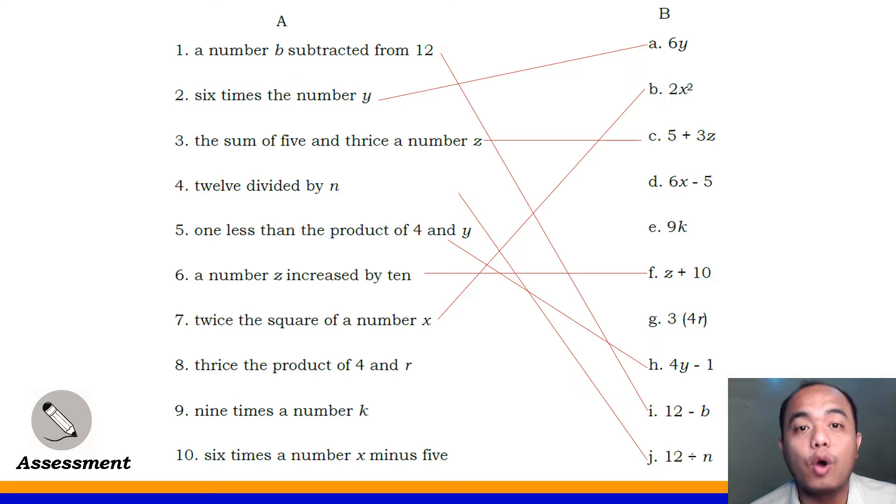Number 8, thrice the product of 4 and R. Very good! It's letter G, 3 times 4R. Next, number 9, nine times a number K. Very good! It's letter E, 9K. Number 10, six times a number X minus 5. Very good! It's letter D, 6X minus 5.